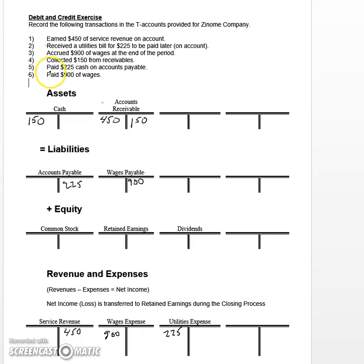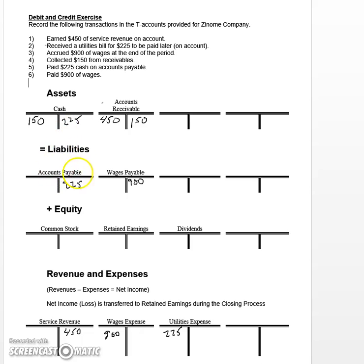Number five says we paid $225 cash on accounts payable. Cash is involved this time and cash went down, so we're going to reflect a decrease to cash on the credit right side for $225. We had originally increased the accounts payable account a few steps ago — that was a liability we owed. Now with this credit to cash, we're paying accounts payable down. So the other side of this entry is a debit to accounts payable to show that we've paid this balance off. If you look at this T-account balance, you can see the original credit and the debit payoff — we no longer owe any liabilities for accounts payable.